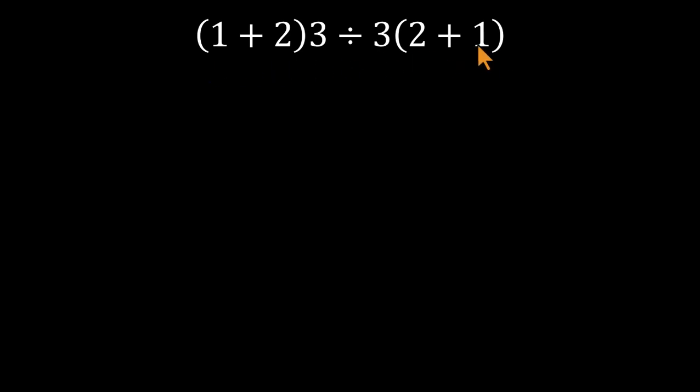Looks simple, right? But most people mess this up. Here's how it usually goes wrong. First, they simplify the parentheses. 1 plus 2 equals 3, 2 plus 1 equals 3. So now the problem looks like 3 times 3, divided by 3 times 3.